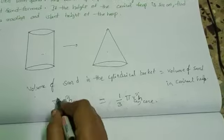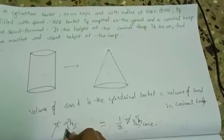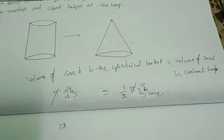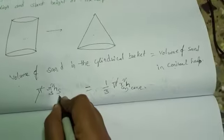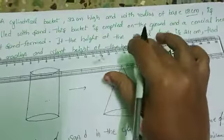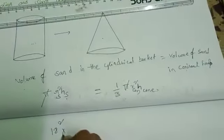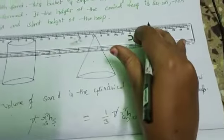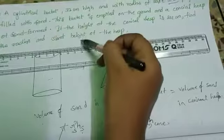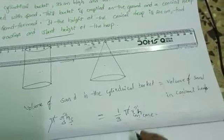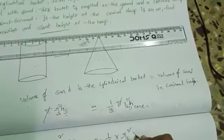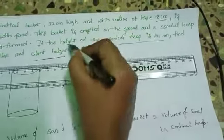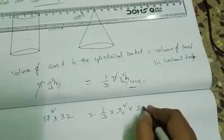So pi gets cancelled. Radius of the cylinder is 18 cm. 18 square h, height of the cylinder is 32 cm. Equals 1 by 3 into radius of the cone. We don't know radius of the cone. We have to find the radius of the cone and slant height. Height of the conical heap is 24 cm.